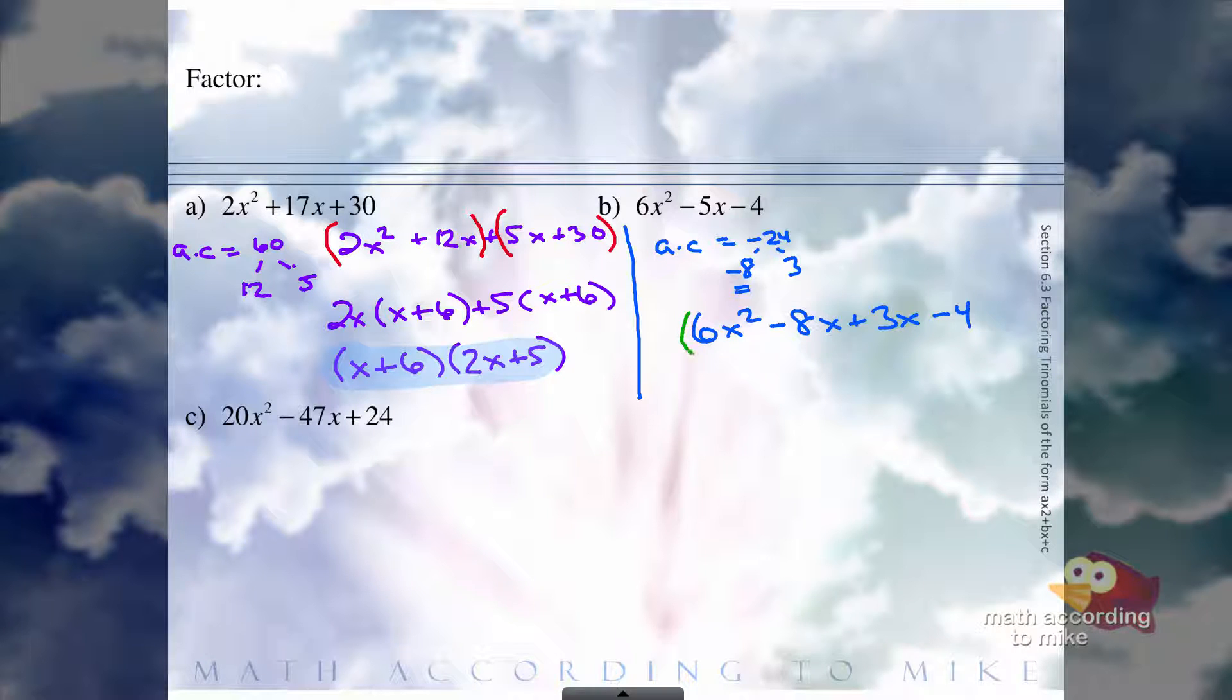From the first group we can pull out a 2x, and we are now left with a 3x minus 4. From the second group we can pull out 1, because the 3x minus 4 is prime. They both have a 3x minus 4, and we're left with 2x plus 1.